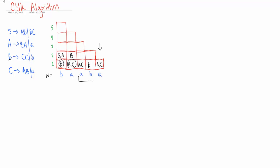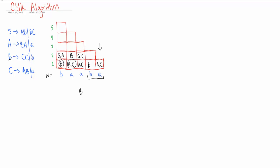Now we're going to be looking at AB. We have A and C, and B for those two letters. Taking the Cartesian product, we get AB and CB. Where do we obtain AB? We obtain it in both S and C. Where do we obtain CB? We don't. So we write S and C. Then for BA, we have B and A and C — taking the Cartesian product we get BA and BC. Where do we get BA? In state capital A. Where do we get BC? In state S. So we write S and A.